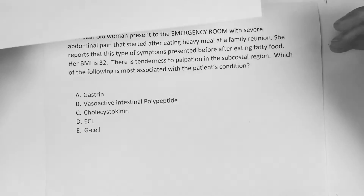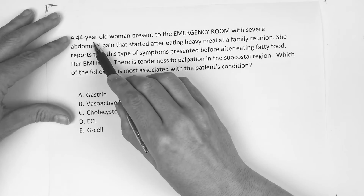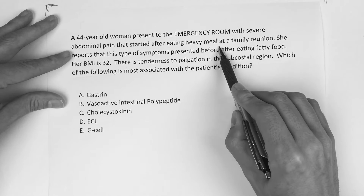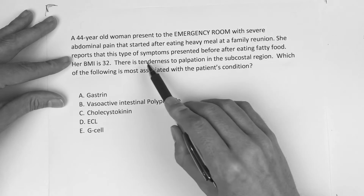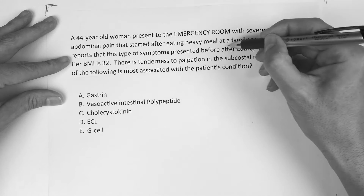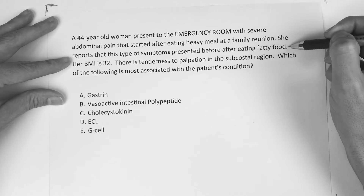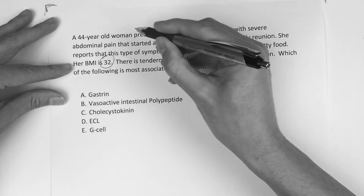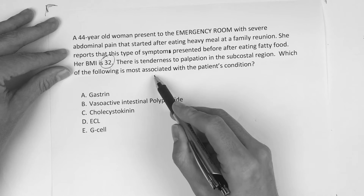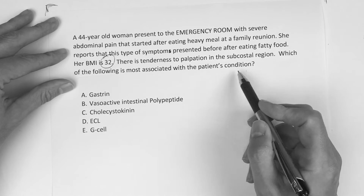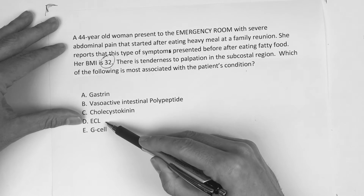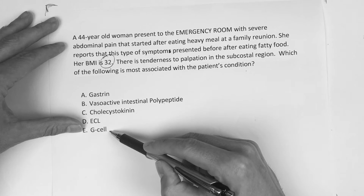The second question should be relatively simple at this point. A 44-year-old woman presents to the emergency room with severe abdominal pain that started after eating a heavy meal at a family reunion. She reports this type of symptom has presented before after eating a fatty meal. Her BMI is 32. There is tenderness to palpation in the subcostal region. Which of the following is most associated with the patient's condition? Is it gastrin, vasoactive intestinal polypeptide, cholecystokinin, ECL, or GCO?